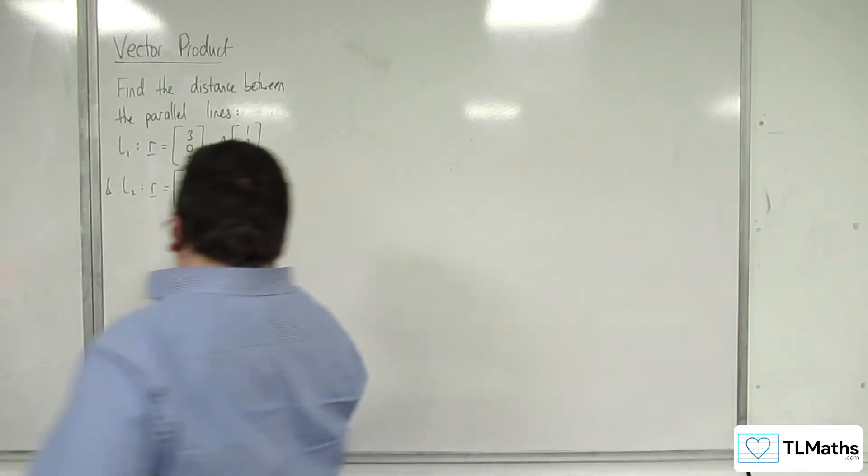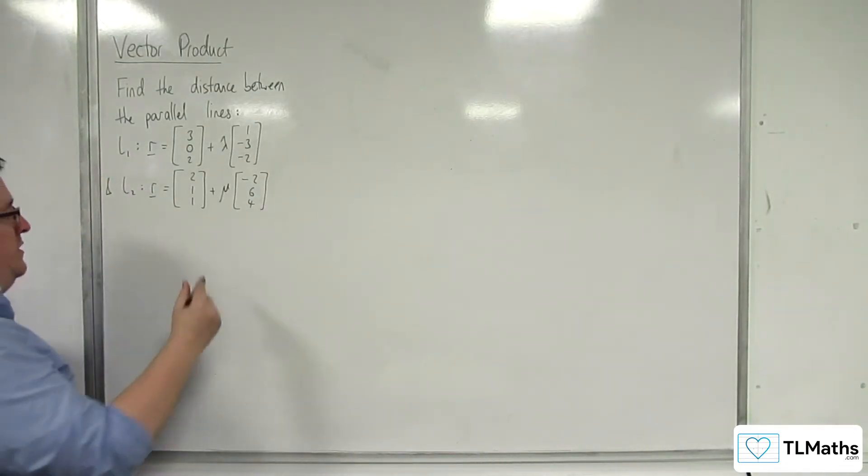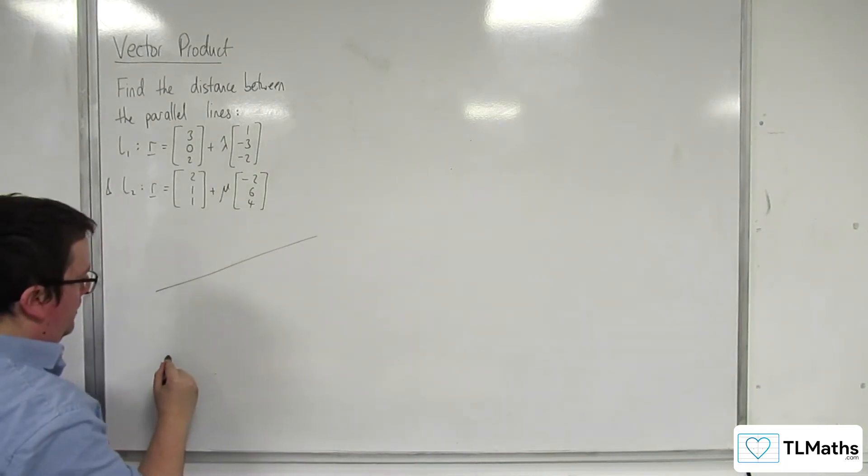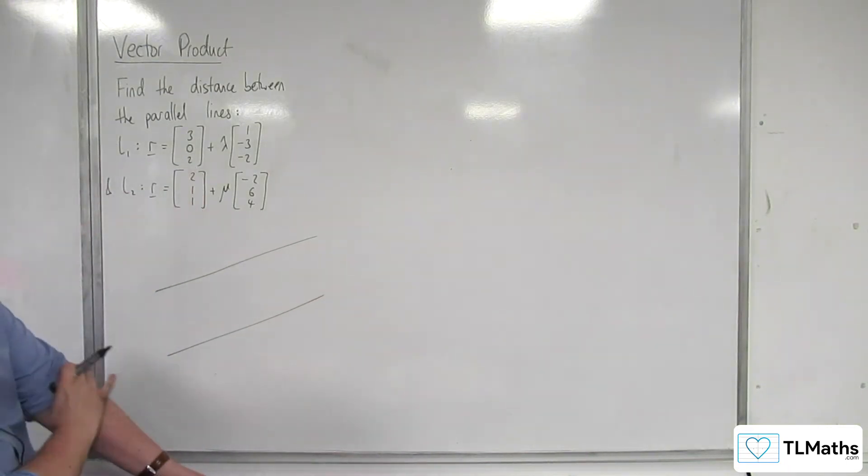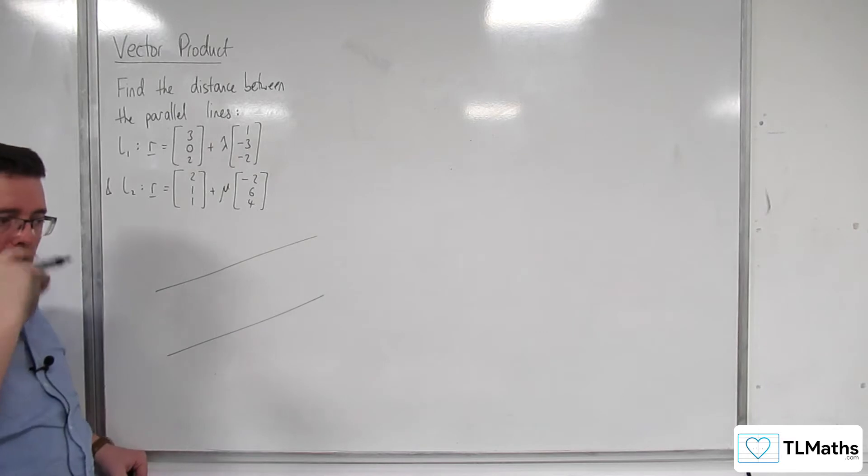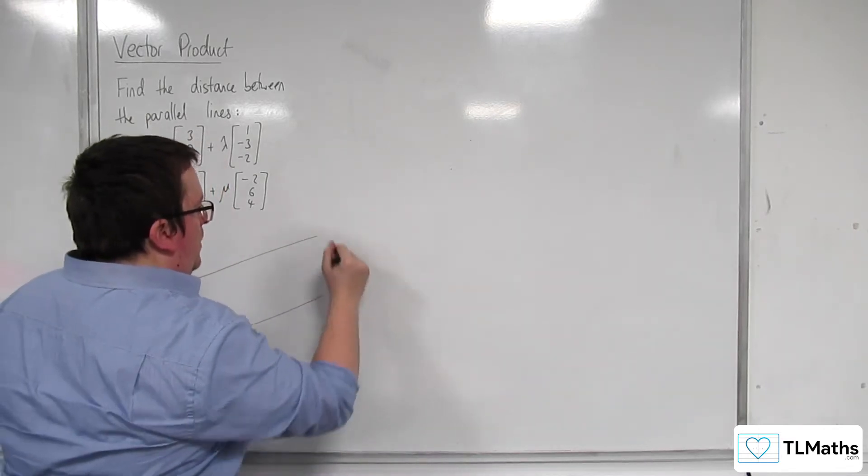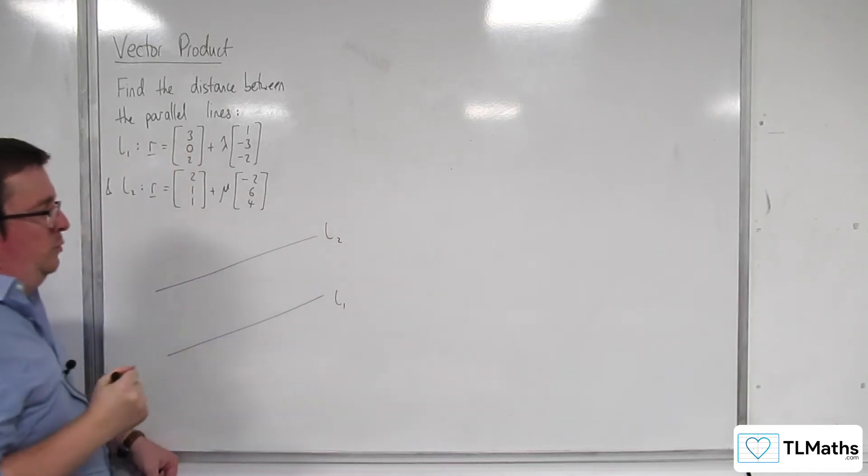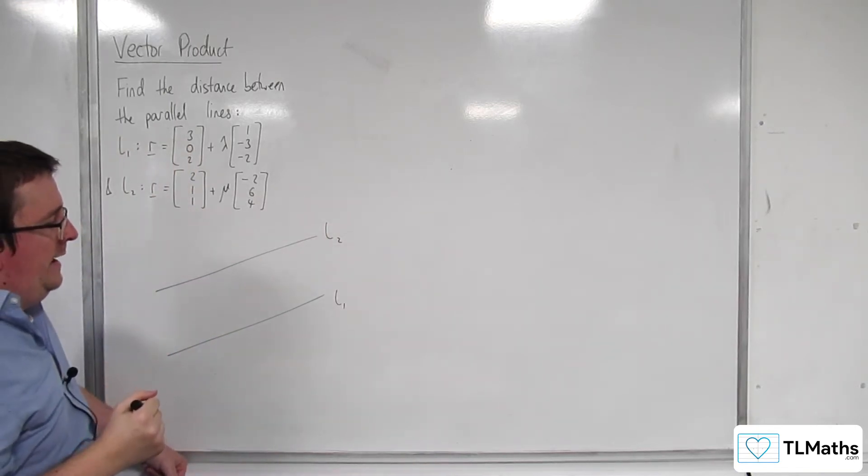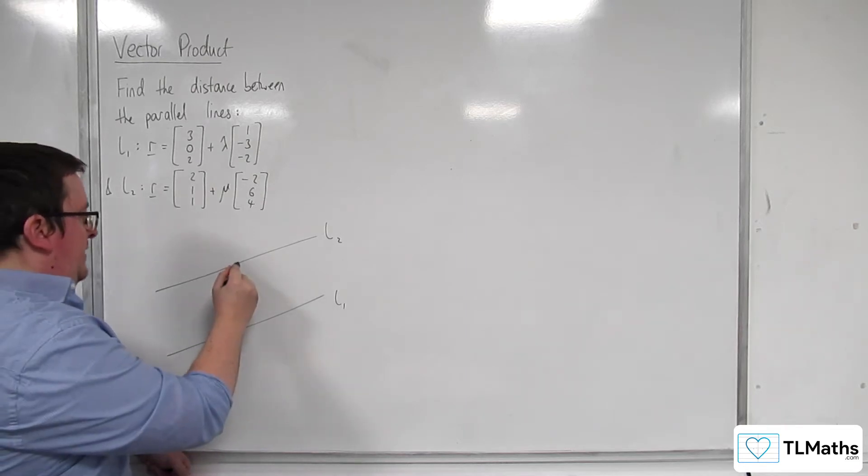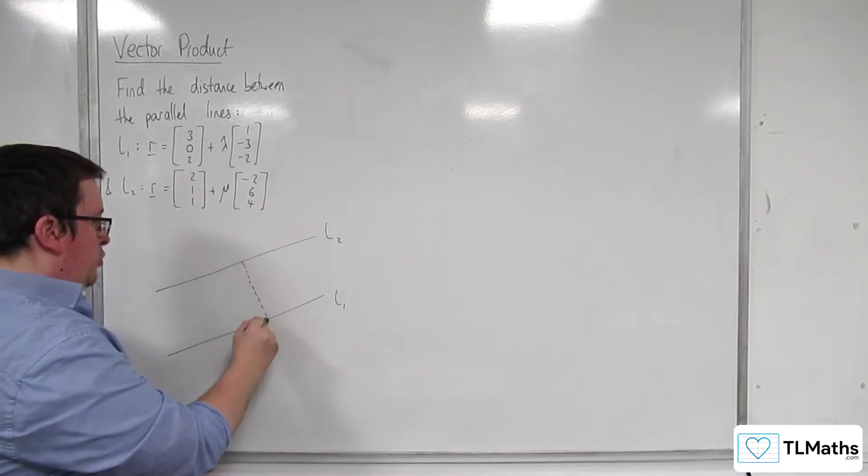So first thing I'm going to do is draw a diagram, so I'm going to visualize what's going on. So here are my somewhat parallel lines. Let's call this one L1 and this L2. And let's say, because I need to find, effectively, the job is this: